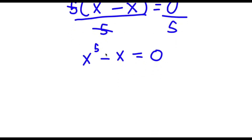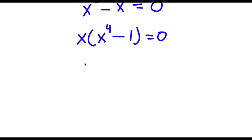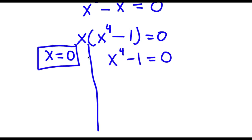From here I can factor out x. If I factor out x I get x times x to the power of 4 minus 1 is equal to 0. Now this gives me two equations: x is equal to 0, and x to the power of 4 minus 1 is equal to 0. So x equals 0 is already one solution, and we can find our other solutions from the second equation.